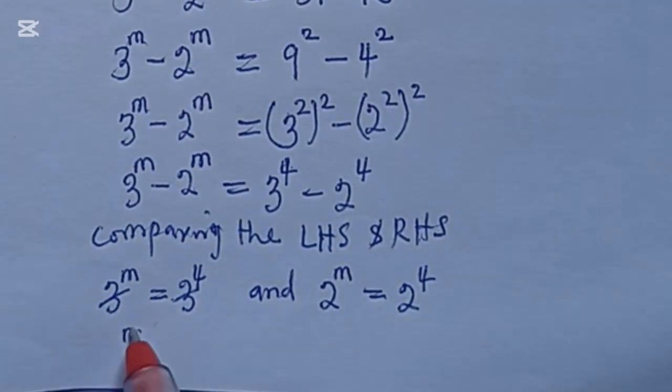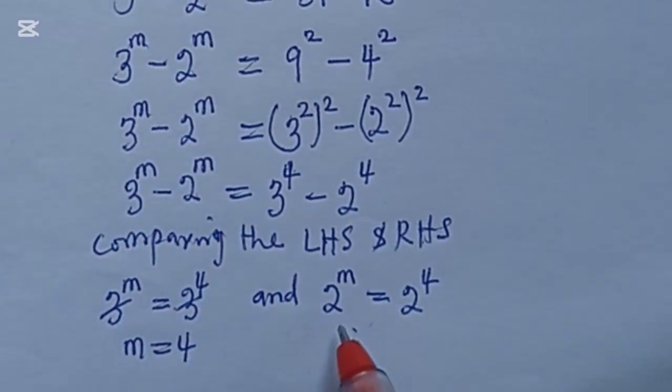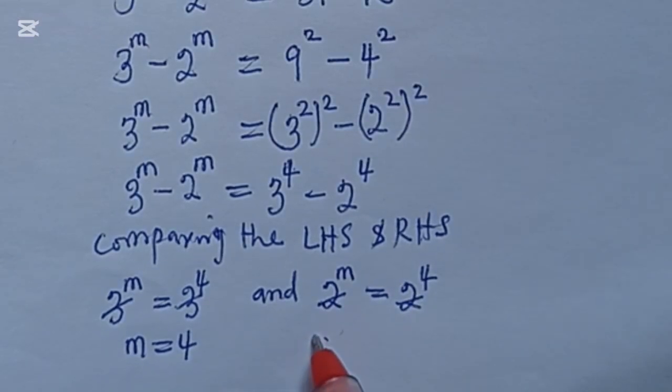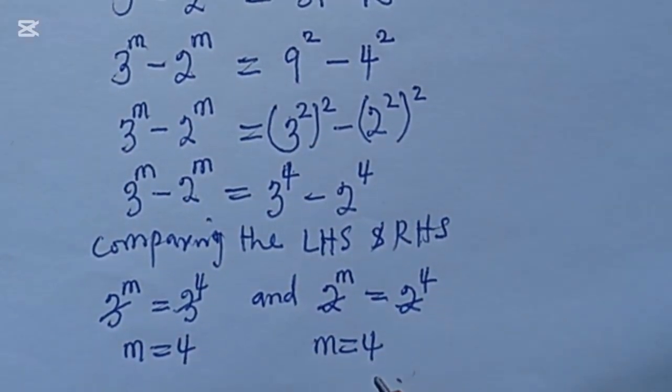3 cancels 3, this gives us m is equal to 4. And 2 cancels 2, that also gives us m is equal to 4.